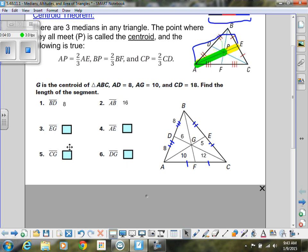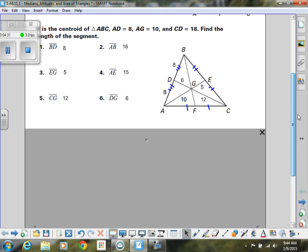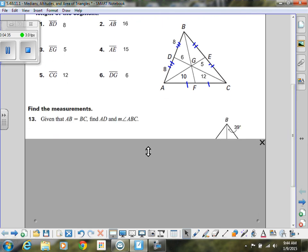And EG, we said that that's going to end up being five. AE is this whole length from here to here, so that whole length is five plus ten, so that would be 15. CG, C to G, we marked that as 12 in our diagram, so that's going to be 12. And DG is just one, that one-third of it, we said that was six. So please go back and rewind that, look at that again if you need to. I know sometimes it's difficult to deal with thirds.